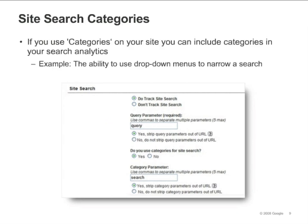If you use categories on your site, such as the ability to use dropdown menus to narrow a search, you can include categories in your search analytics by following these steps. First, select the Yes radio button under Do you use categories for site search? Then, enter your category parameter in the field provided. Enter only the letters that designate an internal query category, such as cat or QC. The same principle that you use to identify the query parameter can be used to identify the category parameter.